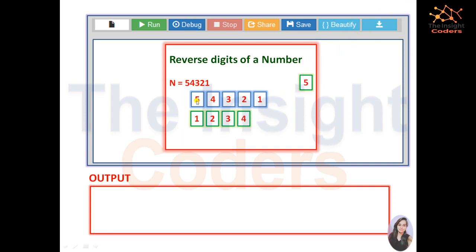Then the third rightmost digit that is 3, fourth rightmost digit that is 4, and fifth rightmost digit that is 5. Means simply from left to right if a number is given, you simply have to write it from right to left. So this is all about reversing a number and the final output will be 12345.